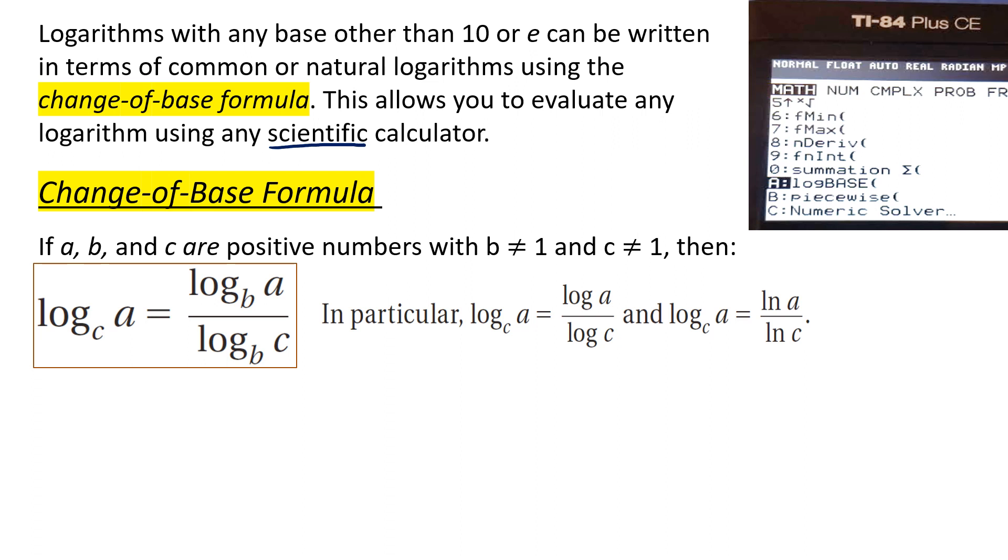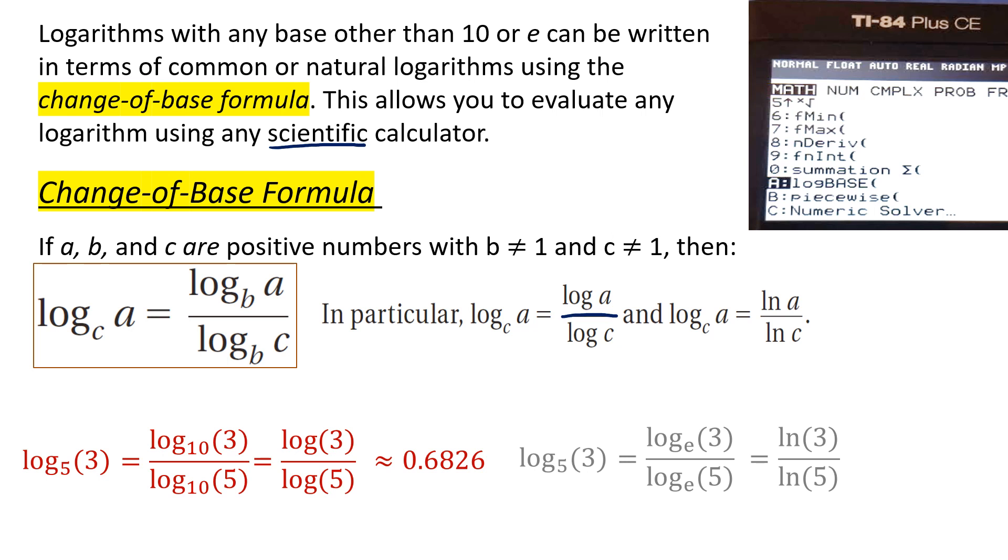So here's the change of base formula. Basically, if you have log base C of A, you could rewrite it as log base B of A all divided by log base B of C. And usually people just stick to the natural log and the common log. Here's an example. So if I pick log base 5 of 3, I could rewrite it as log base 10 of 3 divided by log base 10 of 5. Again, I don't need the 10. I could just write log for the common log and type that in the calculator. You should get 0.6826. If I used a natural log, which is log base e or ln, it gives me the same value.